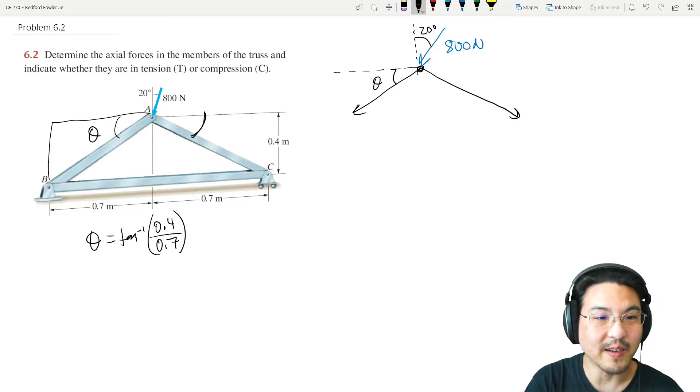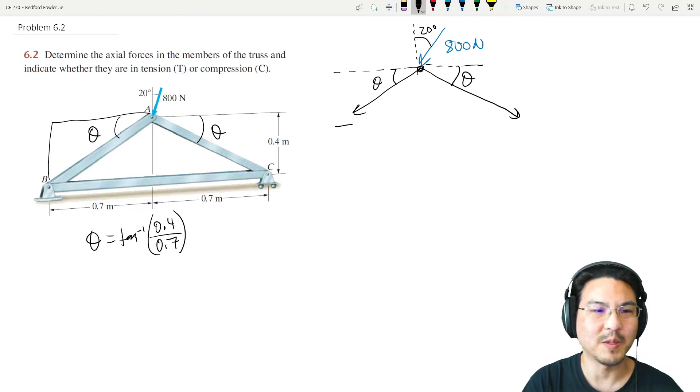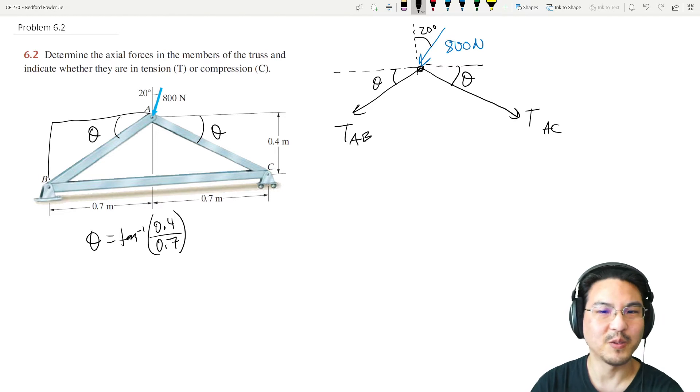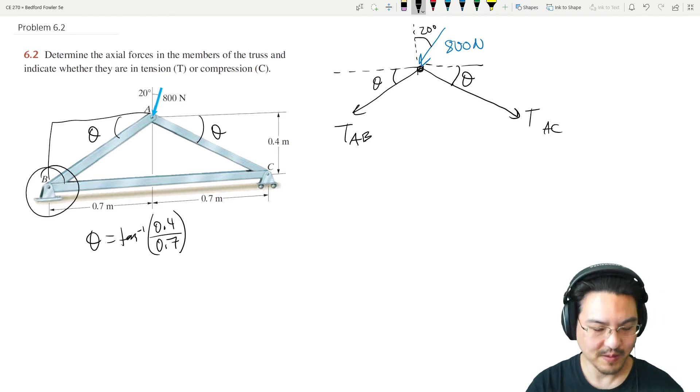Okay, so we know that angle, and then the angle on this side is the same geometry, so it's the same angle on this side. Then same angle on this side. This is between A and B, this one is A and C. So this is joint A, joint B is over here.